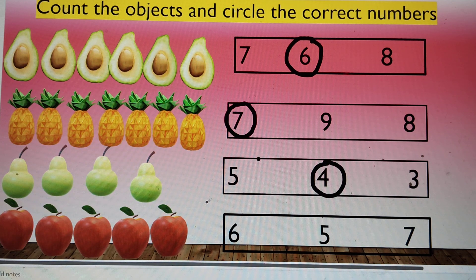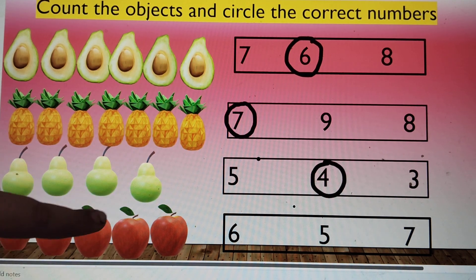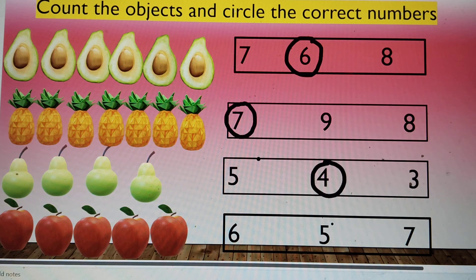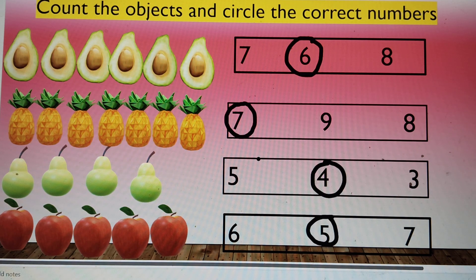Circle the number four. How many apples do you see here? One, two, three, four, five. Five. Now let's move to the next slide.